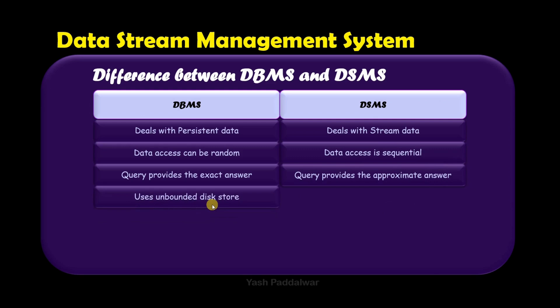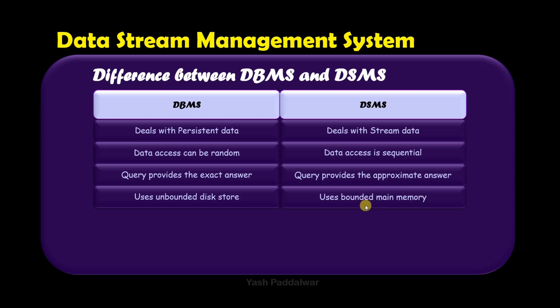The next difference is that DBMS uses unbounded disk storage because the data is static. When it comes to DSMS, it uses bounded main memory for performing real-time and fast calculations or aggregate operations on the entire streaming data.